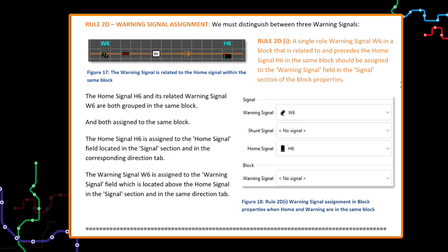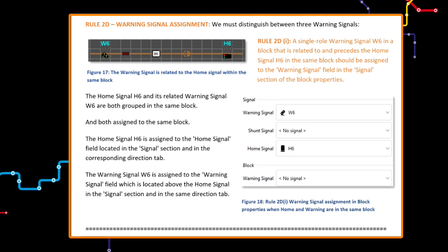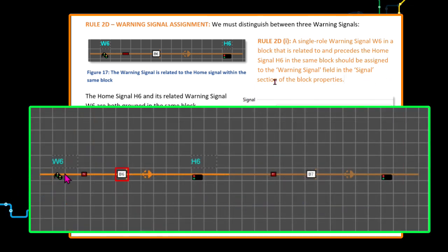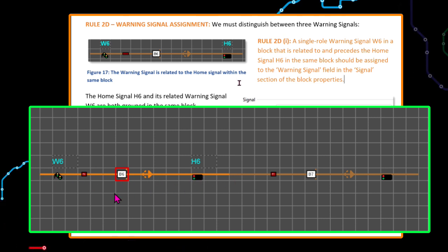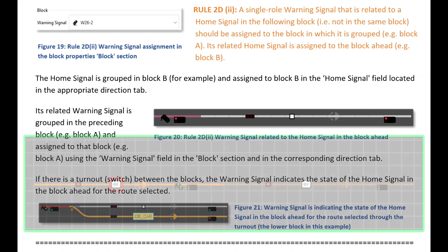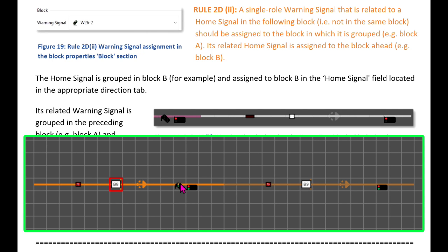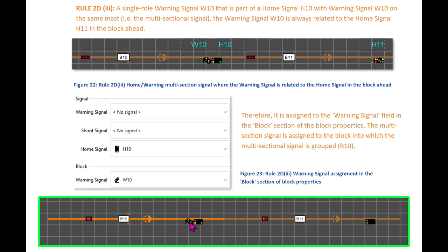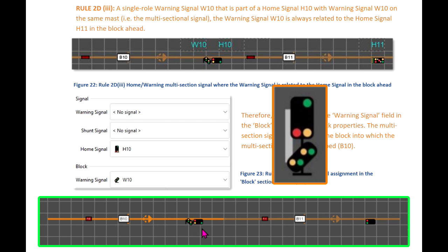For the warning signal assignment, we must distinguish between three warning signal scenarios. First, a single roll warning signal in a block that is related to and precedes the home signal in the same block. Second, a single roll warning signal that is related to a home signal in the following block — in other words, the related home signal in the block ahead. Third, a single roll warning signal that is attached to the same mast as the home signal, also known as a multi-section combined signal.